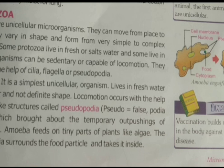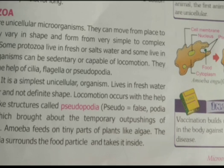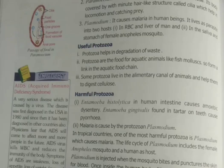They can move from one place to another. They are different in shape — some are very simple and some are complex in structure. Some protozoa are simple. By which method does amoeba intake food? Amoeba ingests food by a process called phagocytosis.